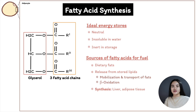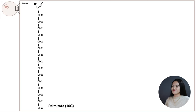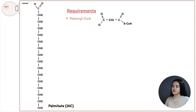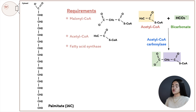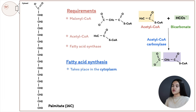Let's go through the main requirements for fatty acid synthesis. To synthesize a 16-carbon saturated fatty acid, we need malonyl-CoA, which is formed from acetyl-CoA and bicarbonate, catalyzed by acetyl-CoA carboxylase. We also need acetyl-CoA, the enzyme fatty acid synthase, and the electron donor NADPH. Fatty acid synthesis takes place in the cytoplasm and occurs in a repeating reaction sequence involving four main steps per cycle.